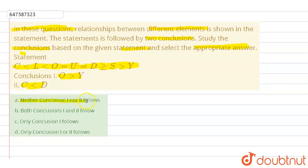And we have four options: either conclusion one or two follows, both conclusion one and two follows, only conclusion one follows, only conclusion two follows.